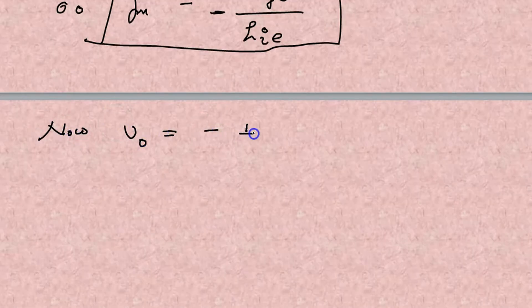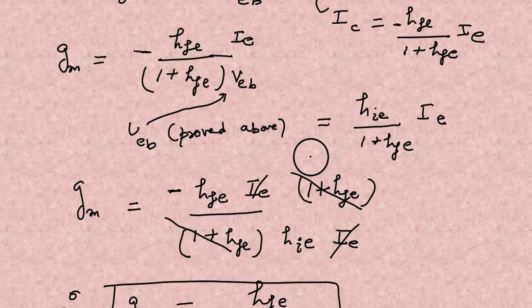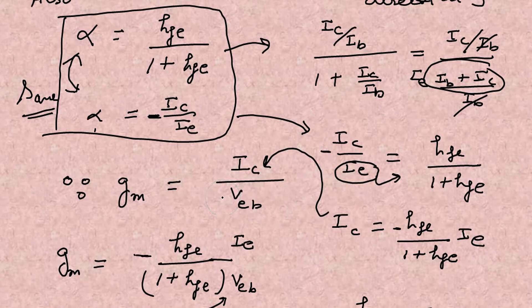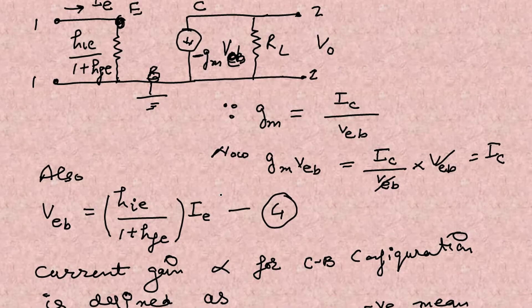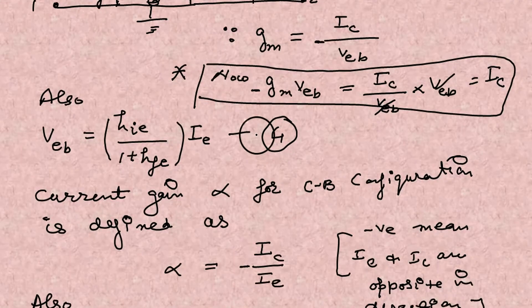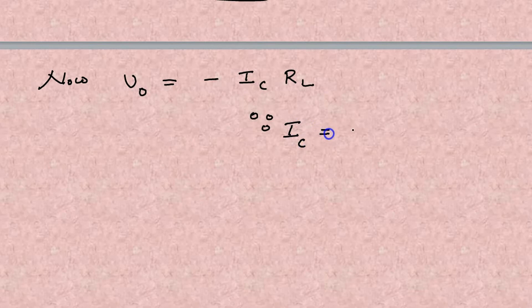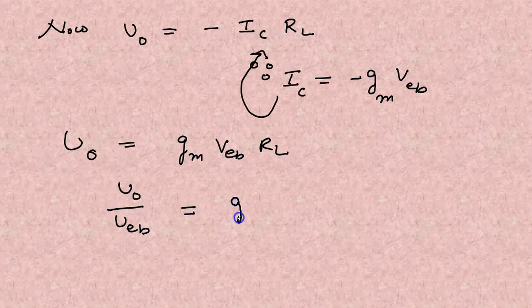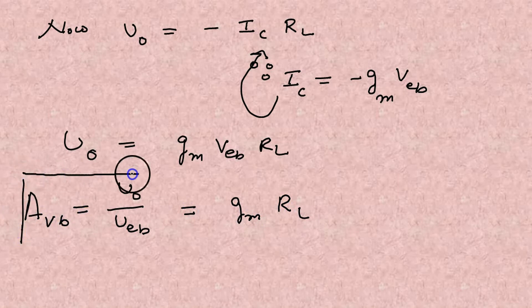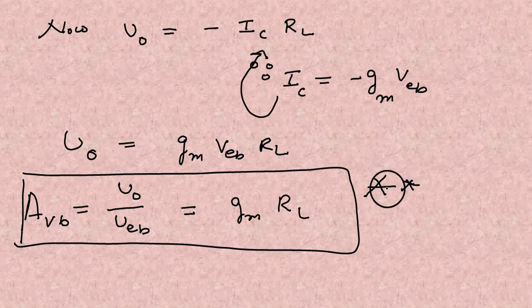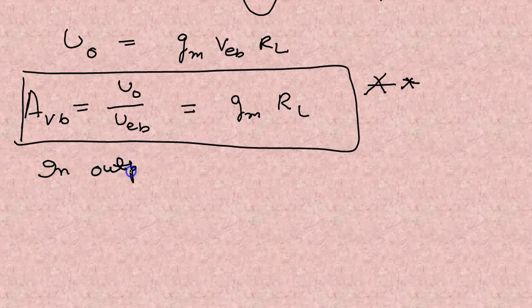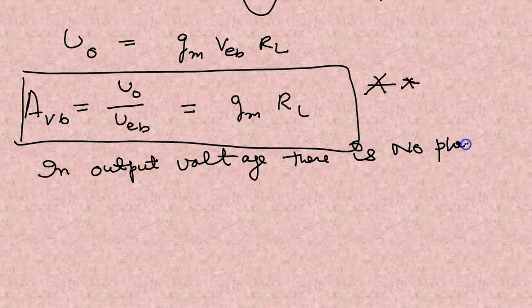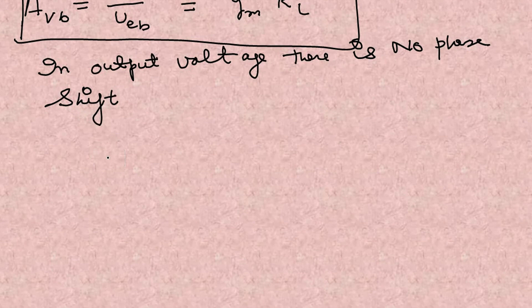You have to remember all the expressions. Now we notice minus IC into RL, minus sign because of the sign convention. And here IC is minus GM into VEB. So minus GM into VEB. Substituting it here, minus minus plus and output voltage becomes this. Do you remember this? Output voltage over input voltage, that becomes the gain of common base. The voltage of common base is same that was in common emitter. So because the voltage gain is in plus, there is no phase shift. Output remains in phase with the input.